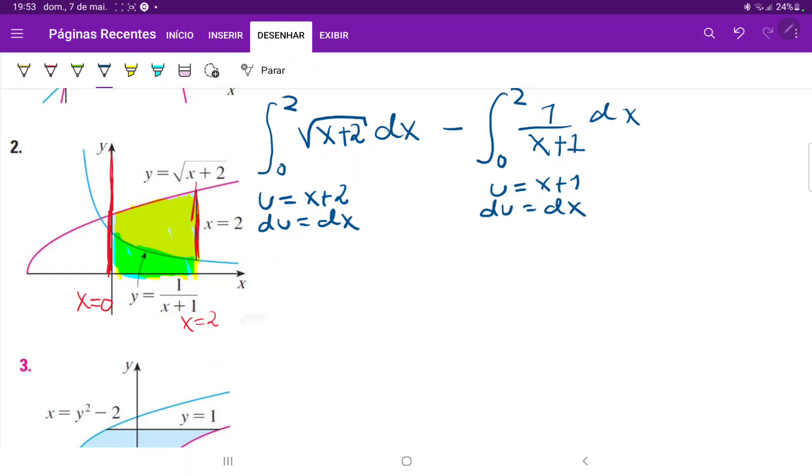So I'm going to put back my substitution, that is from 0 to 2, the integral of square root and wherever I had x plus 2, I'm just going to put u and then du minus the integral from 0 to 2 of 1 over u du. Now, all I did was just substitute it.